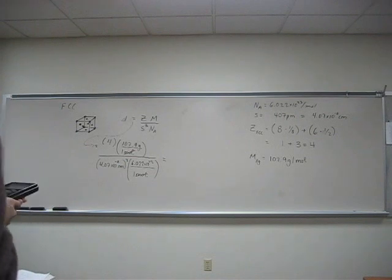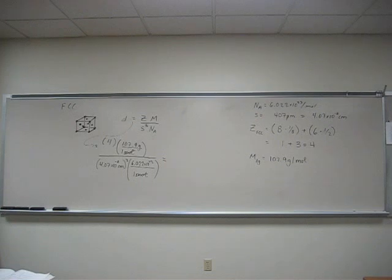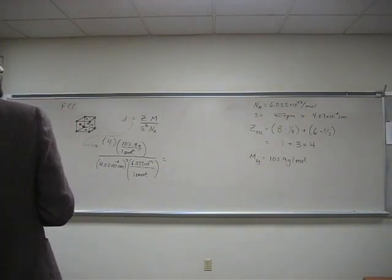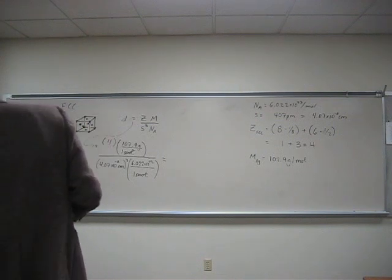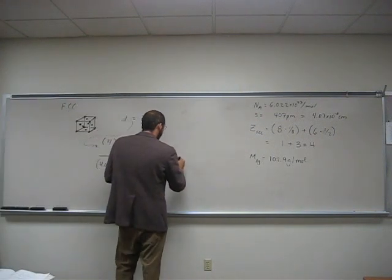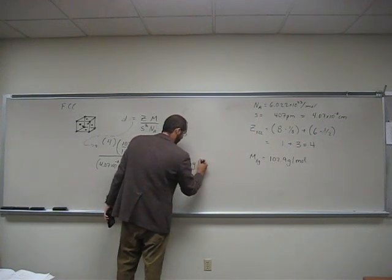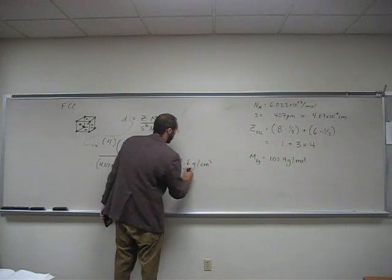So now it's just chug it out. So 7E negative 8, cube that, times 6.022E23, times 107.9... and what is this, 236? So my answer, hopefully is the same as your answer: 10.6 grams per cubic centimeter.